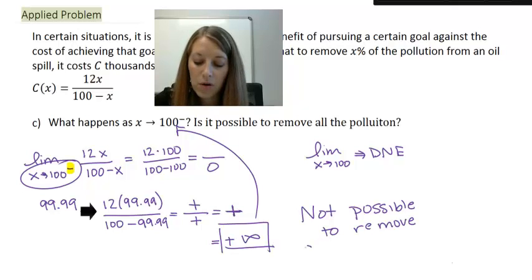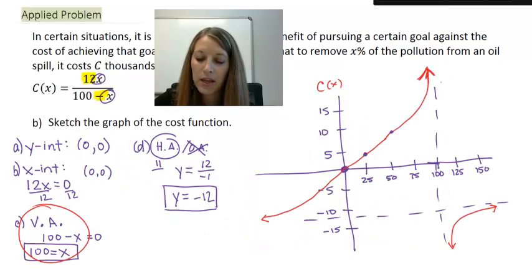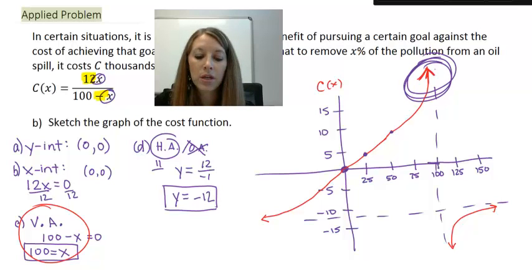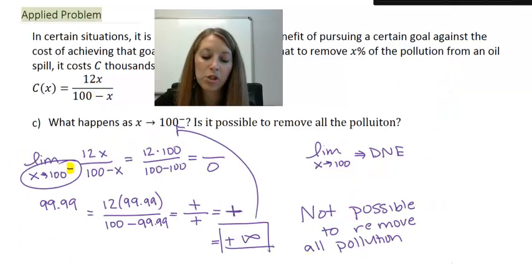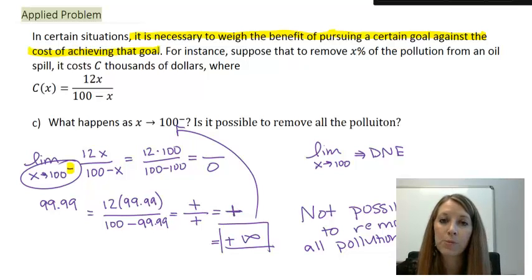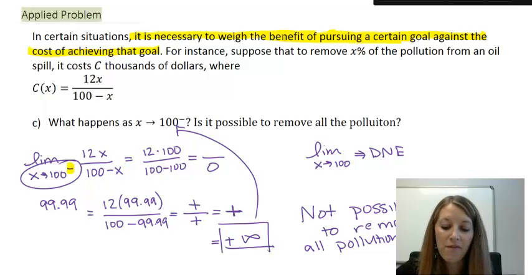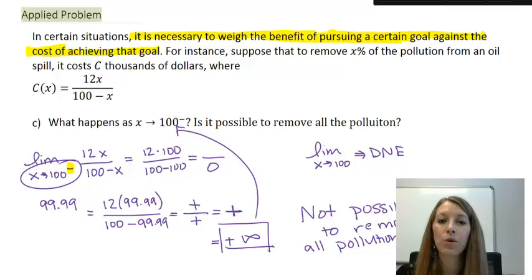So, is it possible to remove all of the pollution? No. Our cost will increase indefinitely as we try to get closer and closer to 100%. The graph was there to help us visualize this — the closer we get to 100, the more it costs. This goes back to the start of the problem: it is necessary to weigh the benefit of pursuing a certain goal against the cost of achieving that goal. We'd love to remove all the pollution from an oil spill, but the cost becomes so great that we must stop at some percentage — whether that's 90%, 95%, or something else. Now you can see how one-sided limits can affect us in a real-life situation.